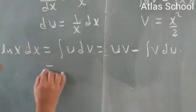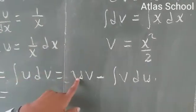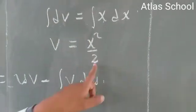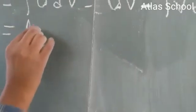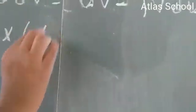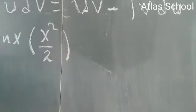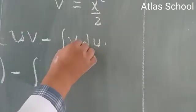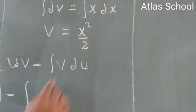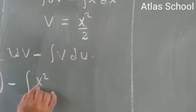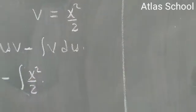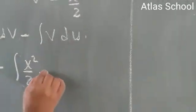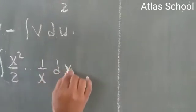Now substitute in the place of u, ln x, and in the place of v, x squared over 2. Then the result becomes ln x times x squared over 2 minus the integral of v. Instead of v, substitute x squared over 2 times, instead of du substitute 1 over x dx, which becomes times 1 over x dx.